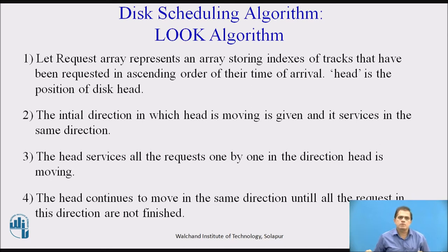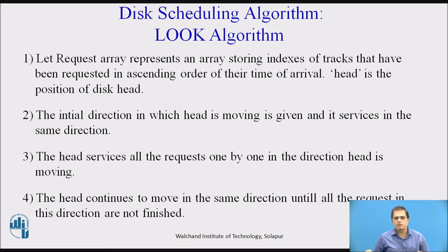The algorithmic steps for LOOK are: Step 1 — the request array stores indexes of tracks requested in ascending order of arrival time, and head is the position of the disk head. Step 2 — the initial direction in which the head is moving is given, and it services in that direction. Step 3 — the head services all requests one by one in the direction it is moving. Step 4 — the head continues moving in the same direction until all requests in that direction are finished.